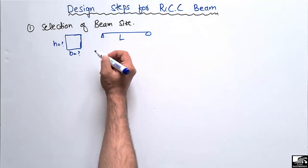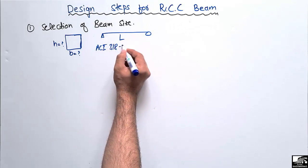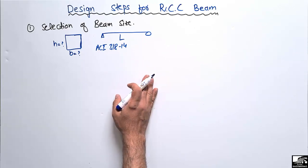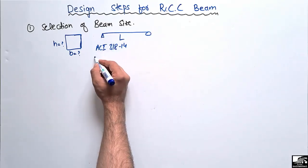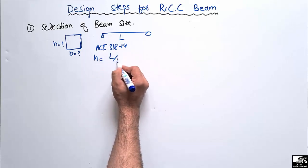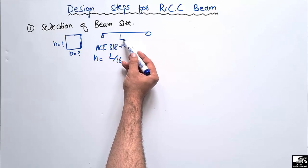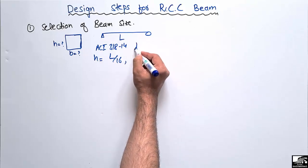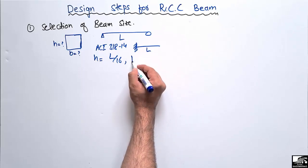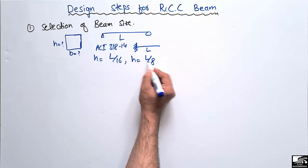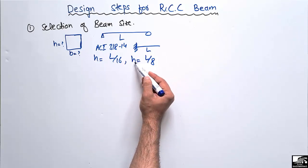How we find these dimensions depends on different codes. According to ACI 318-14, they recommend different thickness values depending on the type of beam. For a simply supported beam, the thickness is given by L/16, where L is the span. For a cantilever beam, the thickness is given by L/8. Once we know the length, we substitute into the formula to find the thickness.